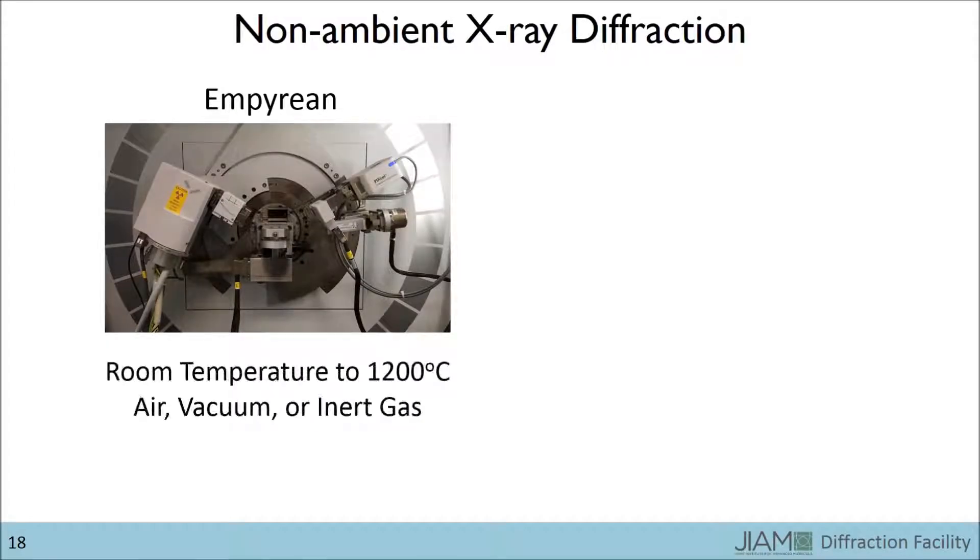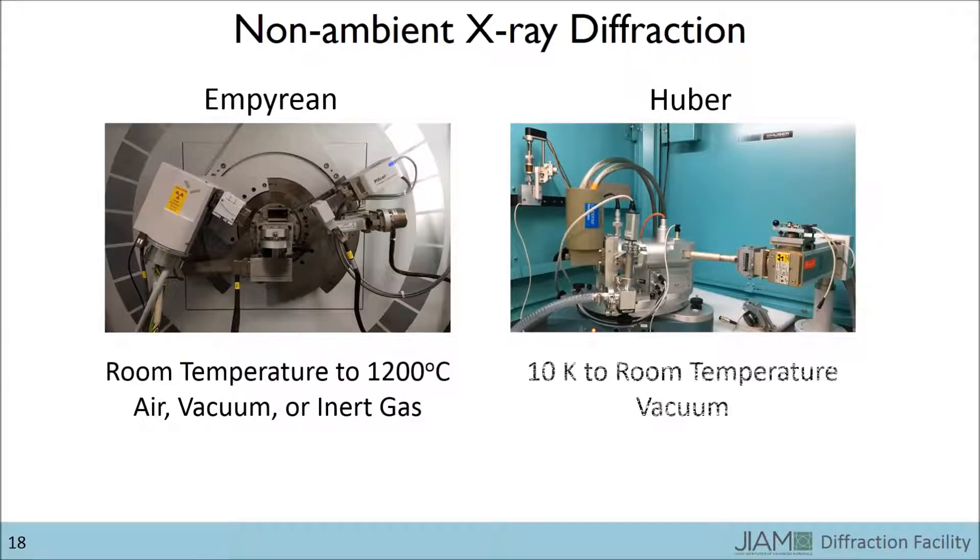Our Empyrean diffractometer ranges from room temperature to 1200 degrees Celsius in air, vacuum, or inert gas environments, while our Huber diffractometer ranges from 10 Kelvin to room temperature in a vacuum environment.